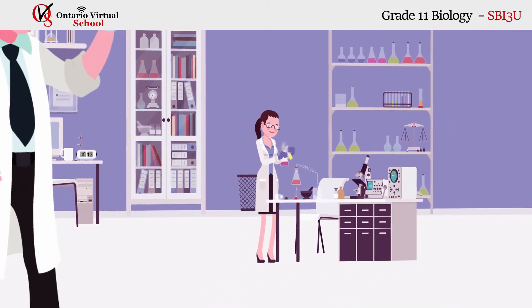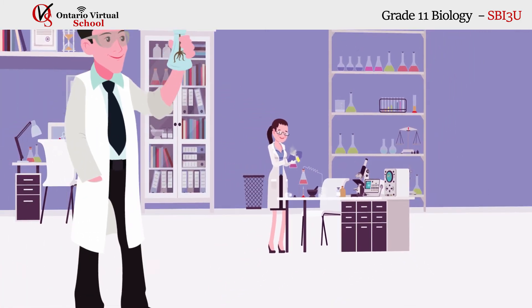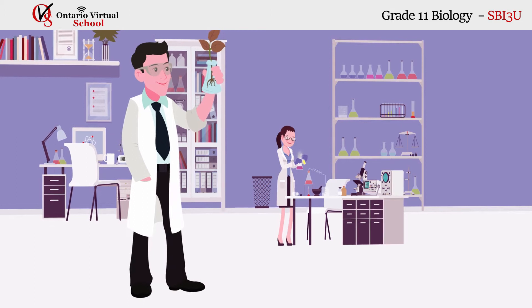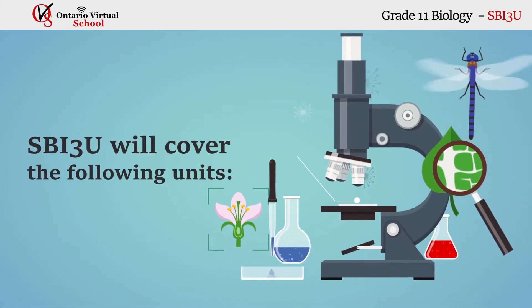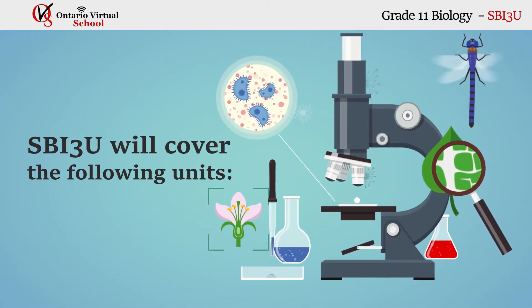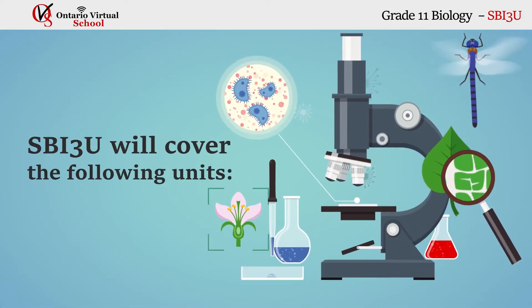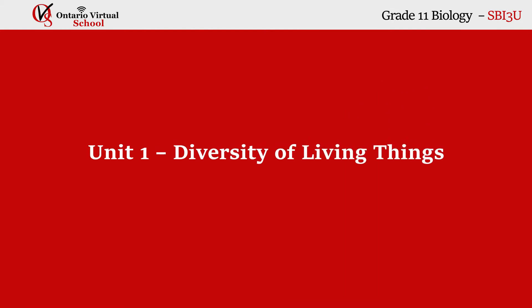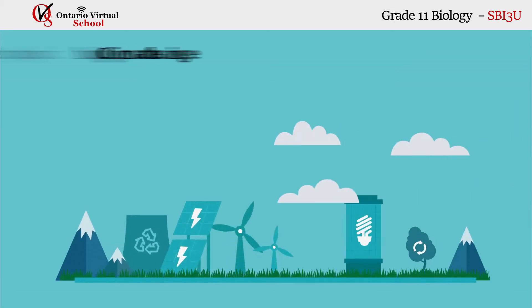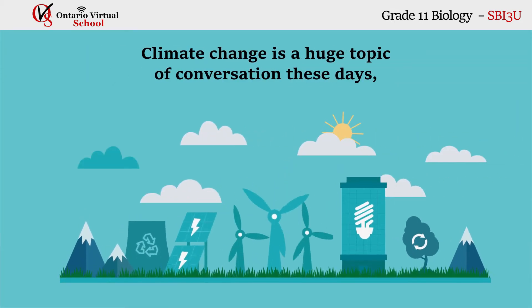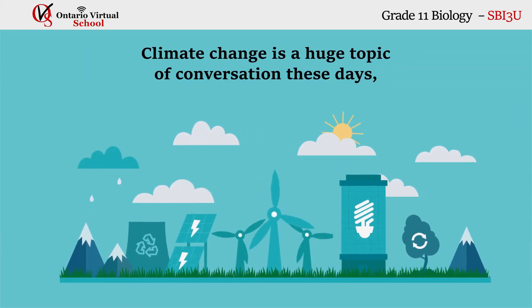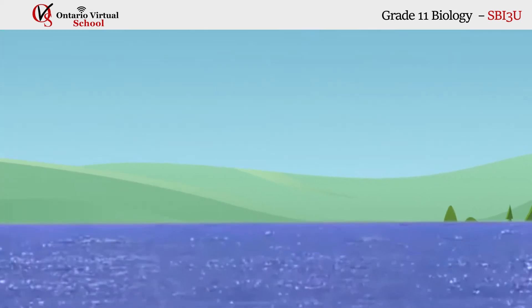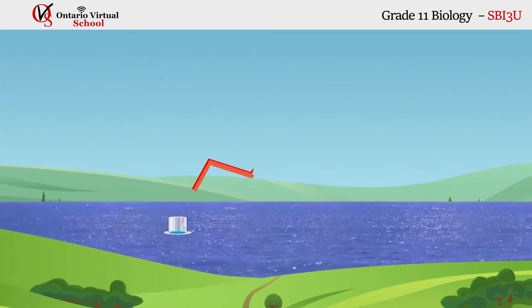SBI 3U will cover the following units. Unit 1: Diversity of Living Things. Climate change is a huge topic of conversation these days, but have you ever stopped to wonder exactly how an increase in ocean temperatures endangers aquatic ecosystems?